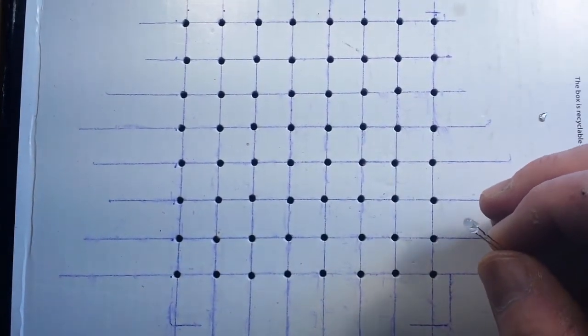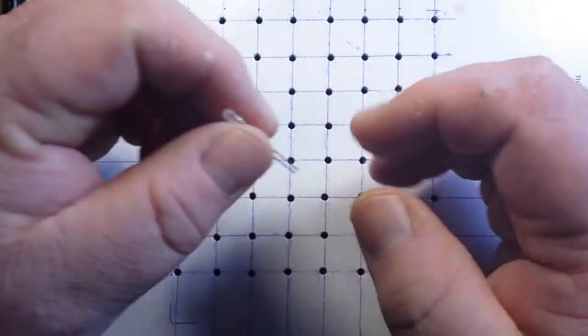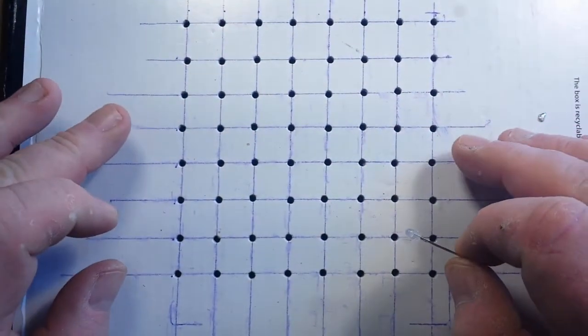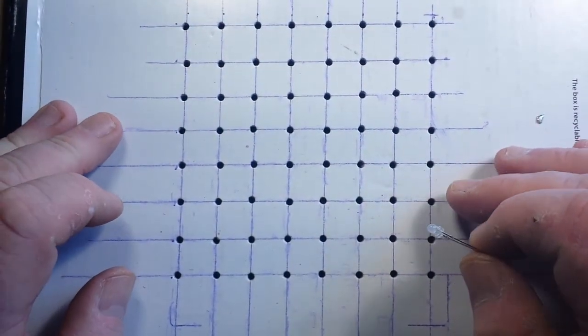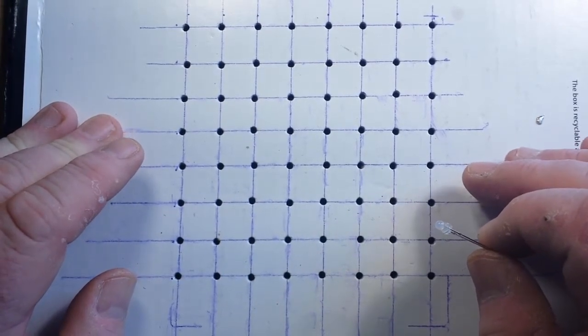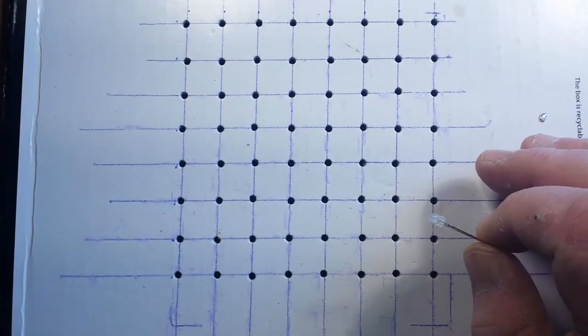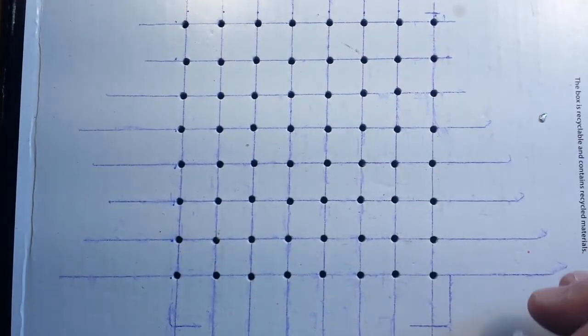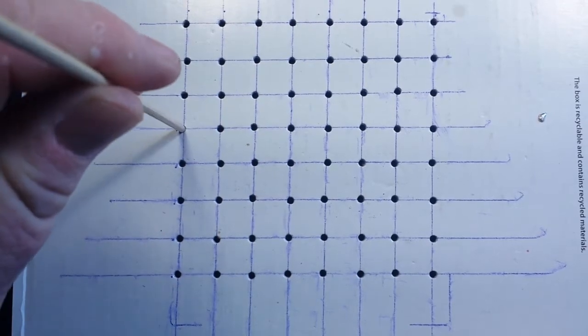So you're going to need 64 LEDs for each layer, and I've laid them out in this grid here to match the grid pattern on the circuit board. And I've made basically a little more than a three millimeter hole with my pokey stick.